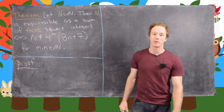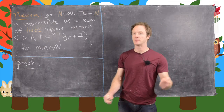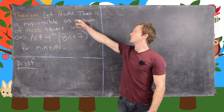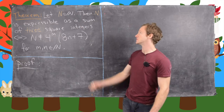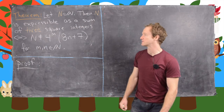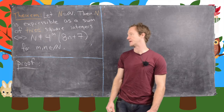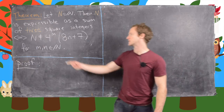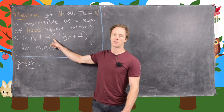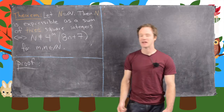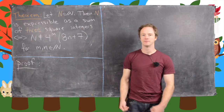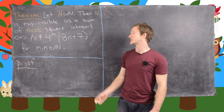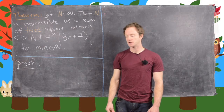It turns out we have a single result here — we don't need to build it up with lemmas or anything. If we let capital N be a natural number, then N is expressible as a sum of three square integers if and only if N is not of the form 4^m times (8n + 7). That form seems like it comes out of nowhere, but that's what you get for this sum of three squares theorem.